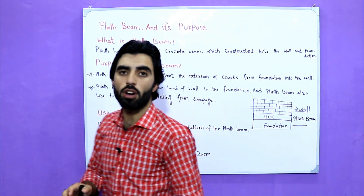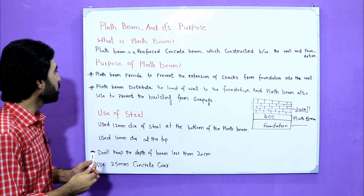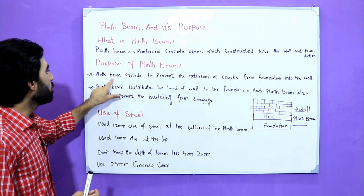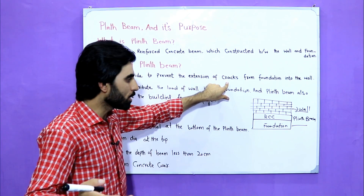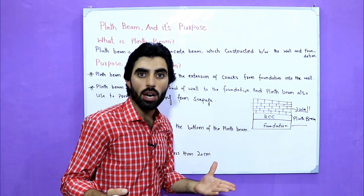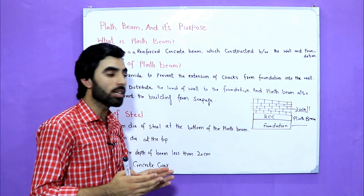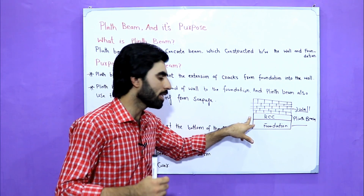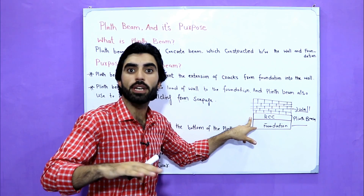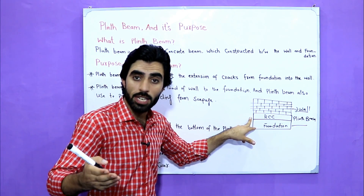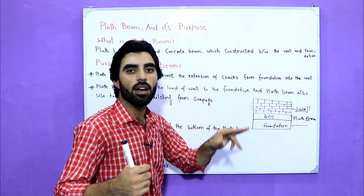So now, what is the purpose of plinth beam? Why do we provide plinth beam? Plinth beam is provided to prevent the extension of cracks. Sometimes you can see cracks in the wall. Why does extension of cracks happen? Because they didn't provide the plinth beam, or if they provided it, it may have failed. Failure of plinth beam is also a cause of extension of cracks in the wall.